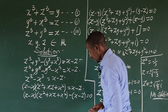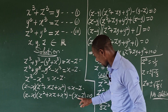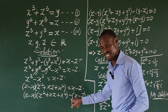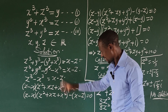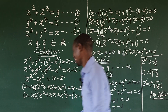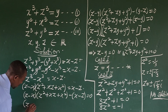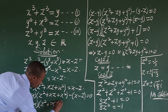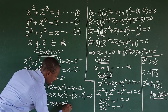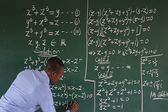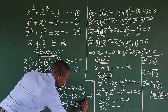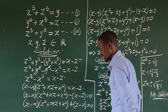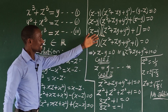Notice that x − z is the negative of z − x, so moving it changes the sign to a plus. We now have (z − x)(z² + xz + x²) + (z − x) = 0. We factor out (z − x) to get (z − x)[(z² + xz + x²) + 1] = 0.